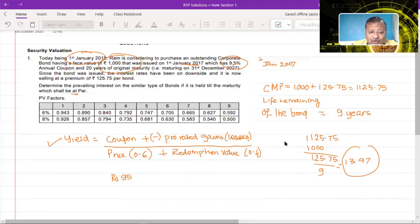That means every year, the investor is going to get a coupon of 95, but at the same time, he's going to incur a loss of 13.97. So that means every year, his return is going to be 95 minus rupees 13.97. So that takes care of the prorated gains or losses.